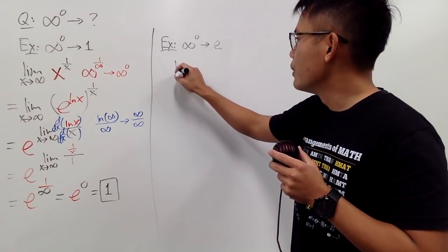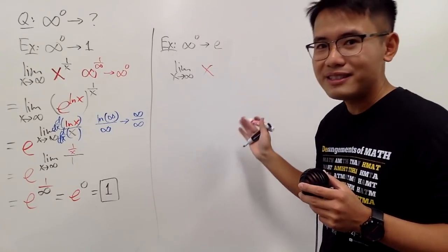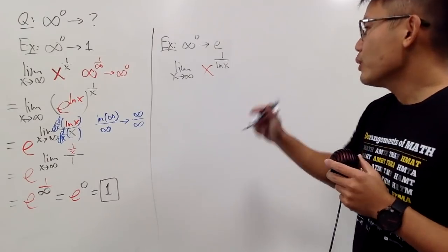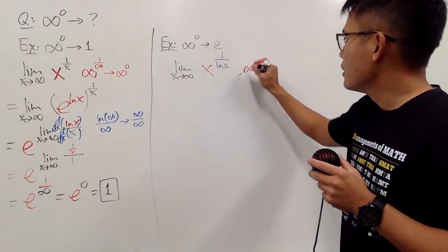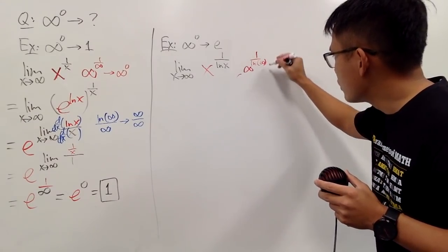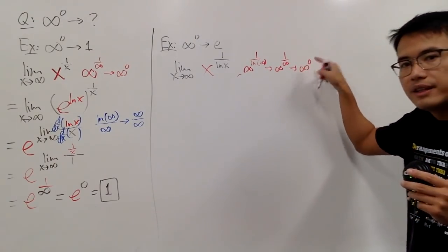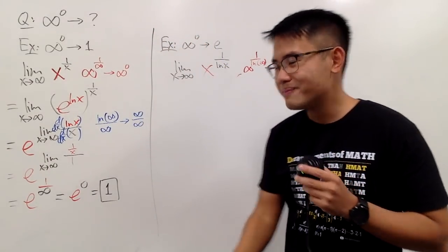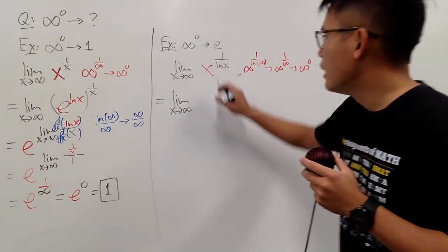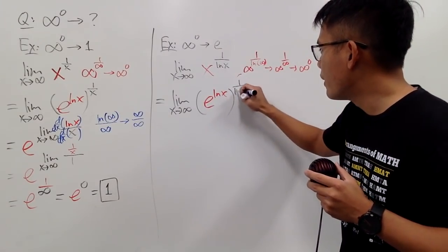Let me show you. Consider the limit as x approaches infinity of x raised to the 1 over ln x power. Quick check: plugging in infinity gives infinity for the base and 1 over ln(infinity) for the power. Since ln of infinity is infinity, this is again infinity to the zero's power — the same indeterminate form. Now I'll rewrite x as e to the ln x, and raise that to the 1 over ln x power.